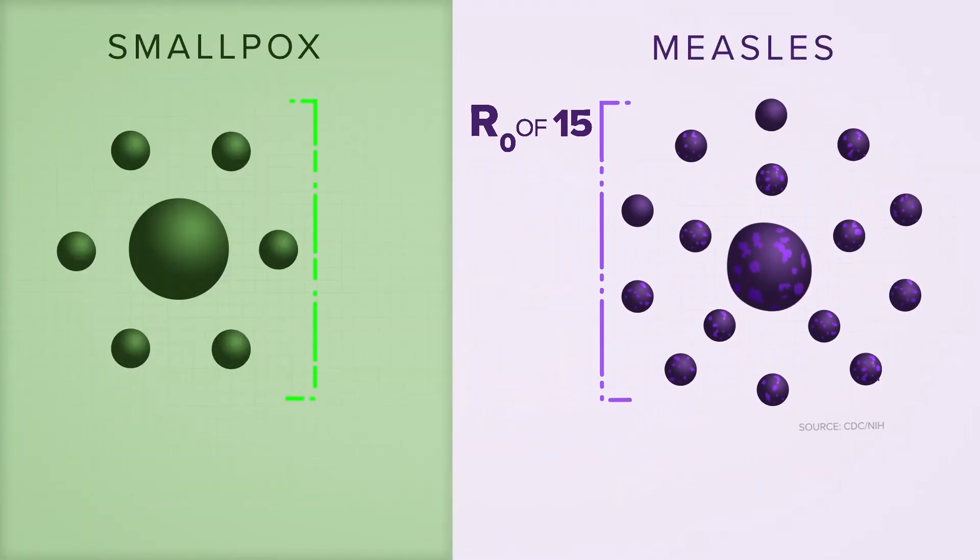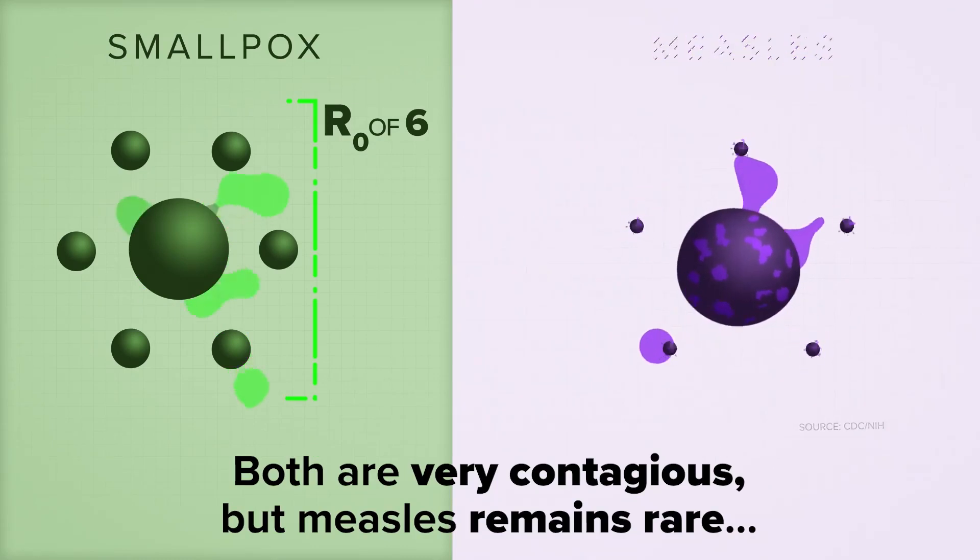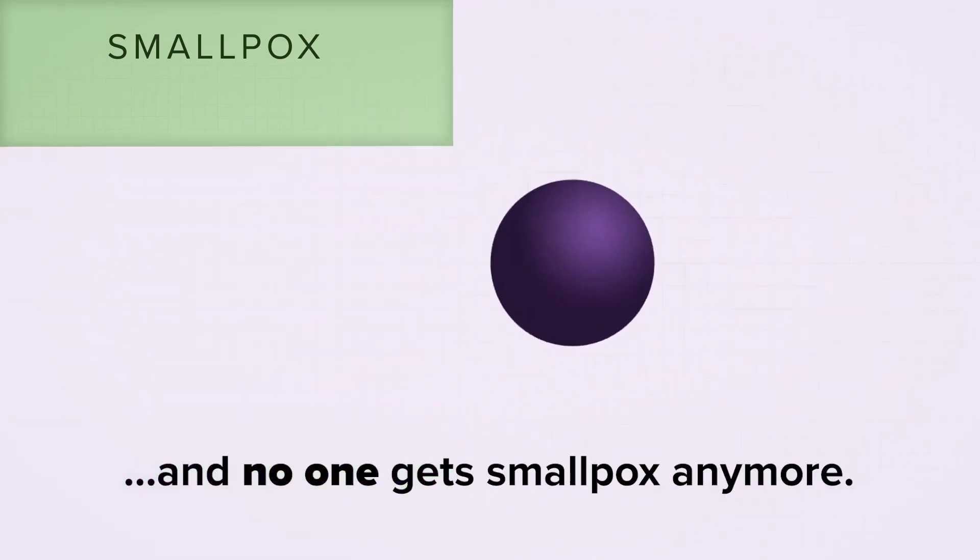The R-naught of smallpox, 6. Both are very contagious, but measles remains rare. And no one gets smallpox anymore.